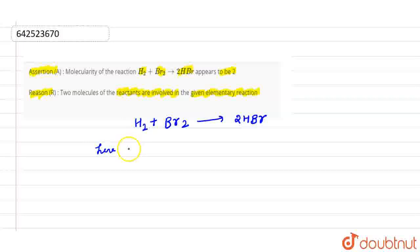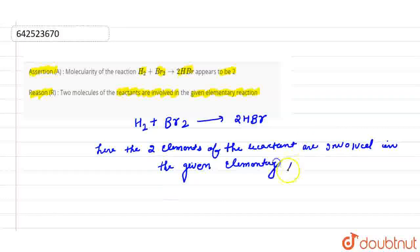Two molecules of the reactant are involved in the given elementary reaction. That's why the molecularity here is 2.